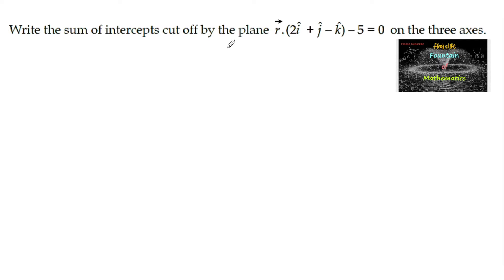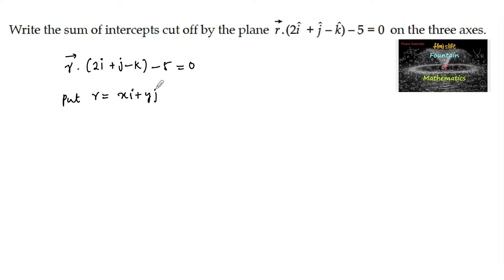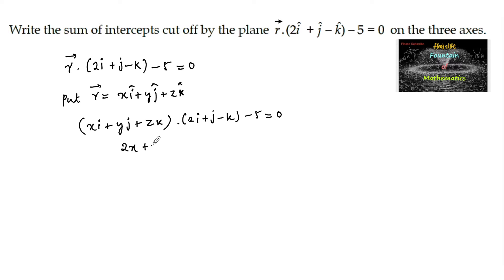Find the sum of intercepts cut off by the plane r dot (2i + j - k) - 5 = 0 on the three axes. Let us write this in Cartesian form. Put r equal to x·i + y·j + z·k, so that we have 2x + y - z - 5 = 0 as the Cartesian form of the given plane.